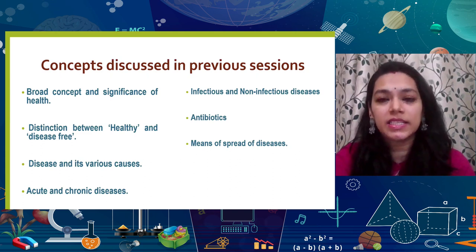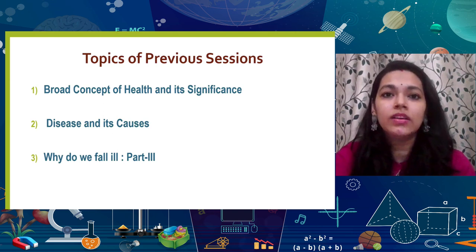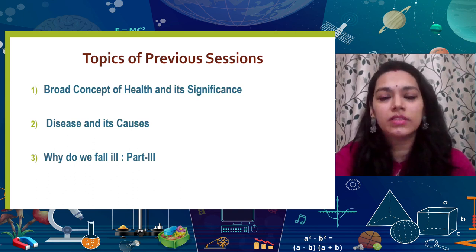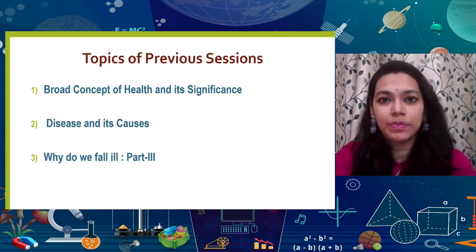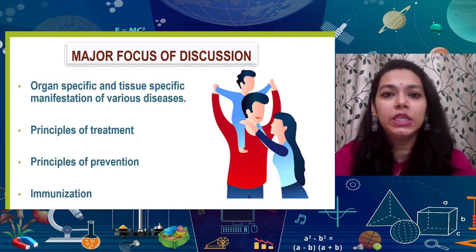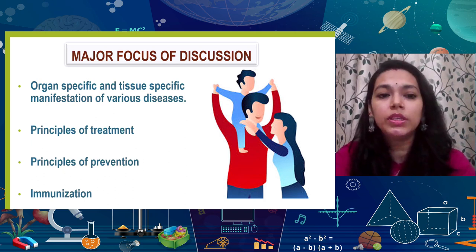I also discussed the means of spread of disease. Those are the major sub-topics covered in previous sessions. The first session was on broad concepts of health, the second was on disease and its causes, and the third was on why it is important — part two. This session is the last part — part four — where we will complete the chapter discussion. Today we will cover organ-specific and tissue-specific manifestations for various diseases, principles of treatment, principles of prevention, and the concept of immunization.